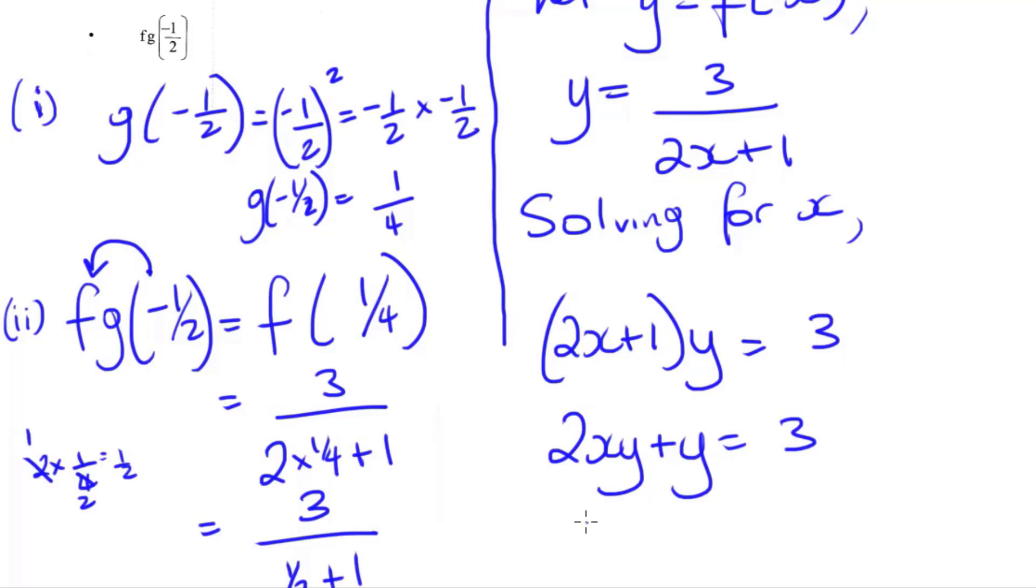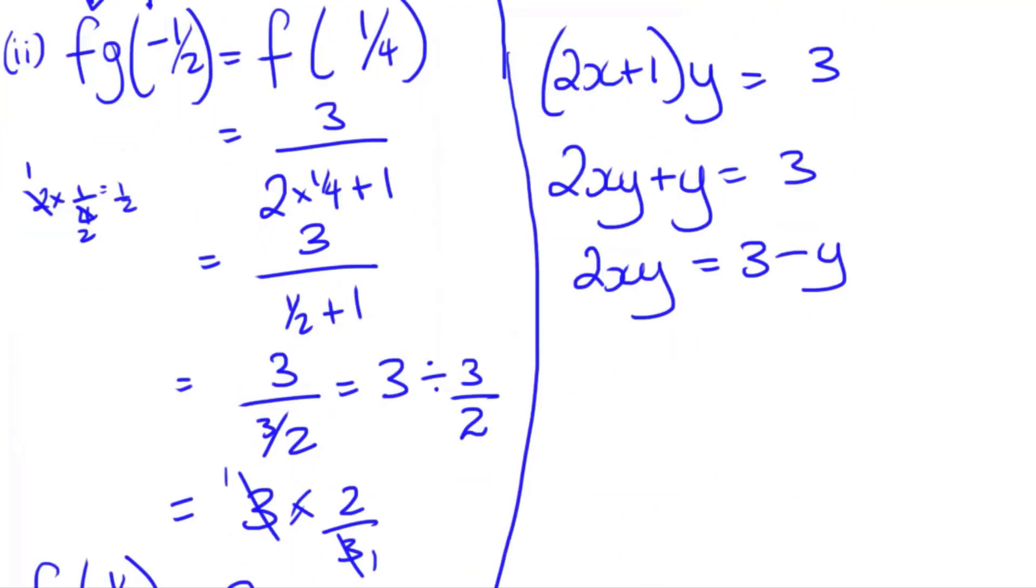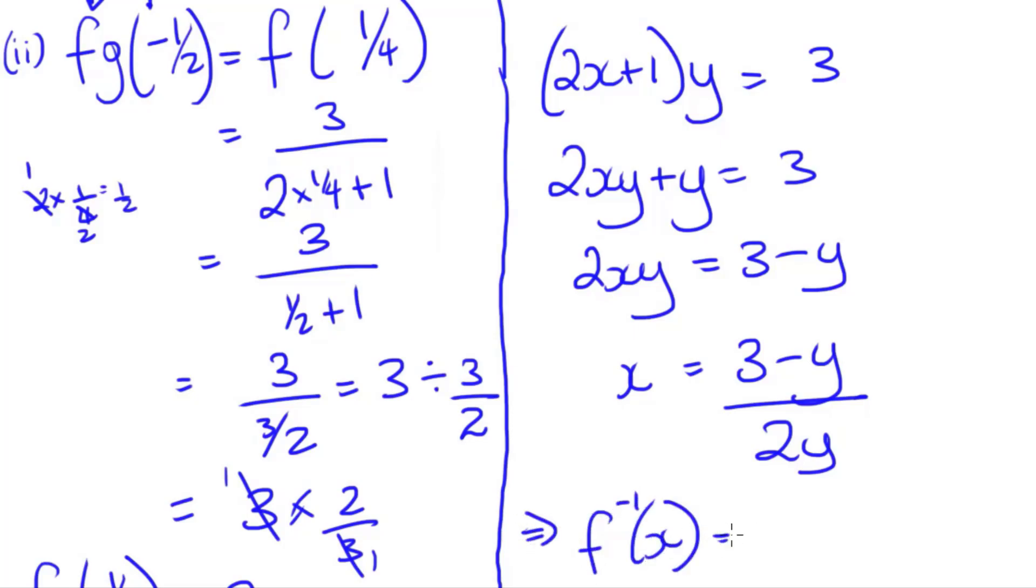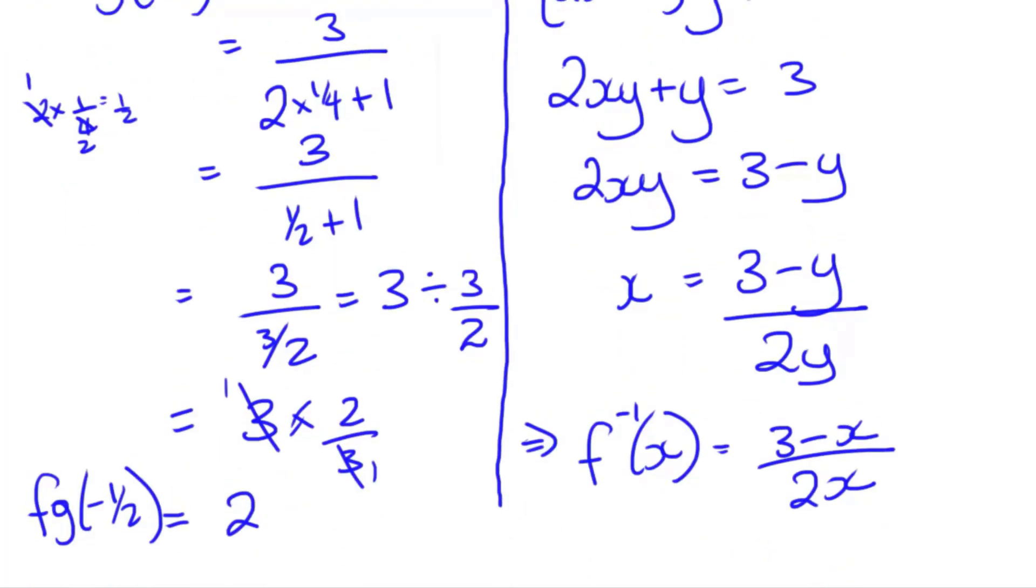So 2xy is equal to 3 minus y. I want x by itself. So that means I can divide both sides by 2y. X is going to be equal to 3 minus y divided by 2y. Now that I've solved for x, I can change back my x to f inverse of x, because that's what x represents. And I can change y to x to represent my new input. So f inverse of x is equal to 3 minus x over 2x.